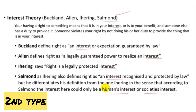Now let's learn about the second type — interest theory. It was propounded by great jurists like Salman, Ehring, Allen, and Buckling.